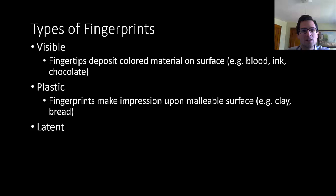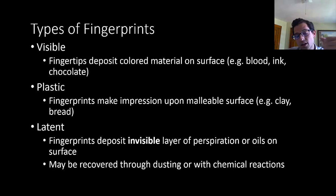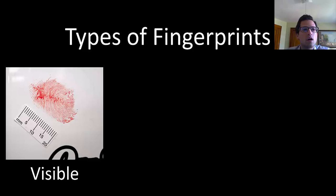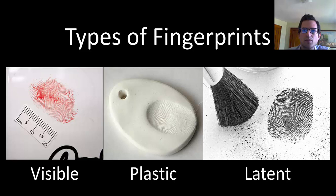And then we have latent prints. Latent prints are when the friction ridges of the finger deposit an invisible layer of either perspiration, which is what's naturally secreted by the fingertips, or maybe oils from the hair on their fingers. These are invisible but they can be recovered through fingerprint dusting, and there are also chemical reactions which will allow you to develop latent fingerprints. Here is a nice visible fingerprint in what appears to be blood. Here's a plastic print in clay or plaster, and here is a latent print developed with black fingerprint dusting powder.